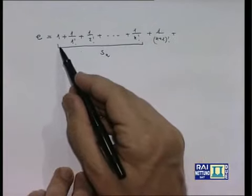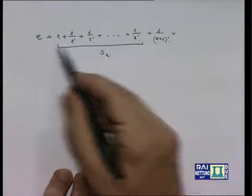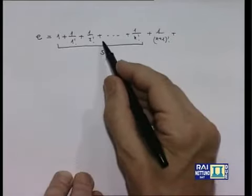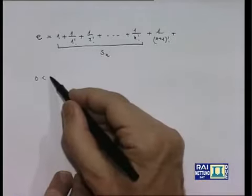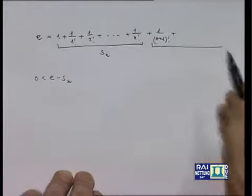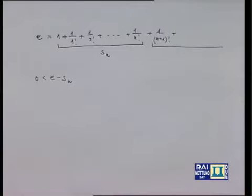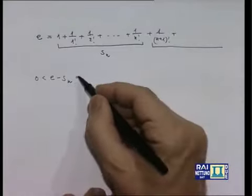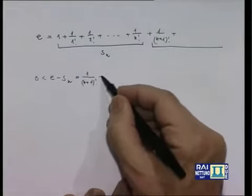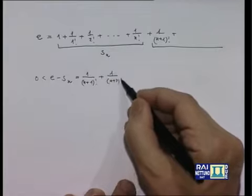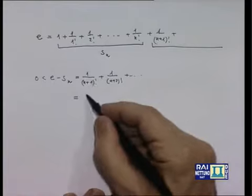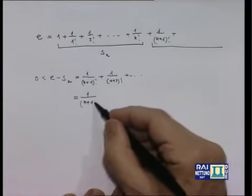Se prendo questa Sₙ come stima di e, che errore commetto? È una stima per difetto, quindi 0 < e - Sₙ, e questa differenza è la somma di tutti i termini trascurati: 1/(n+1)! + 1/(n+2)! + ···. Posso raccogliere a fattor comune 1/(n+1)!, così mi rimane 1 + 1/(n+2) + ···.